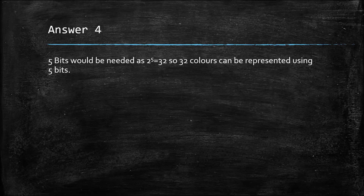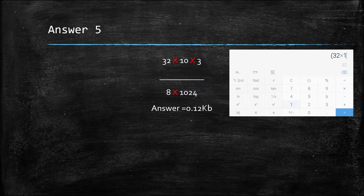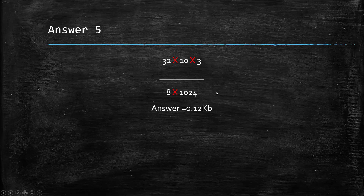Finally, exam question five asks you to calculate the image size in kilobytes from given information. The calculation would be 32 times 10 times 3, divided by 8 times 1024, giving an answer of 0.12 kilobytes, rounded. I hope that's been helpful — any questions, comment below. Please like, subscribe and share. Thank you very much.